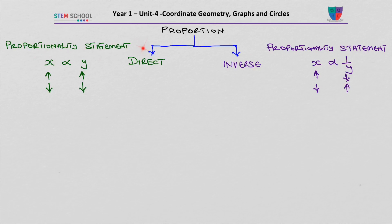Proportionality statement: x is directly proportional to y. That's a proportionality statement and we have to write it like that. Proportionality is just describing the relationship between two variables. For direct proportionality, when x increases, y increases; when x decreases, y decreases.